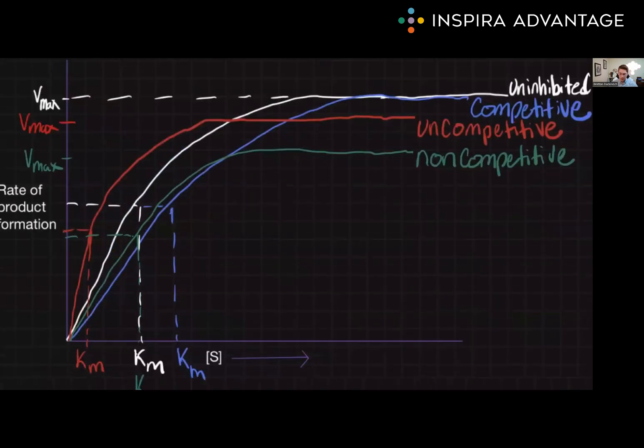Next, let's talk about uncompetitive inhibitors. And I apologize for the naming, but I'll have to take it up with someone else. Uncompetitive inhibition occurs when the inhibitor binds only to the enzyme-substrate complex, and not to the free enzyme. This type of inhibition is specific to enzymes that have multiple substrate binding sites. When the inhibitor binds to the enzyme-substrate complex, it prevents the complex from being converted into a product. As a result, the enzyme activity decreases.